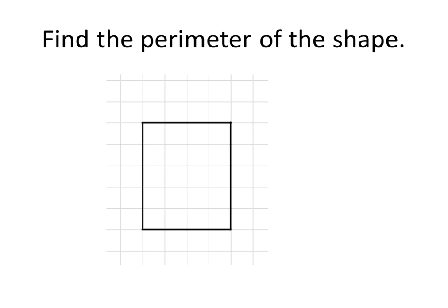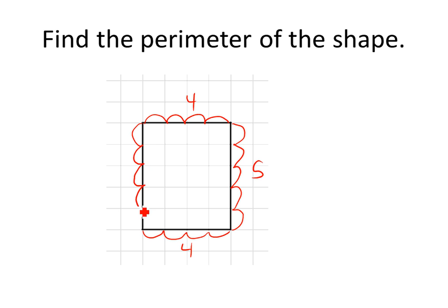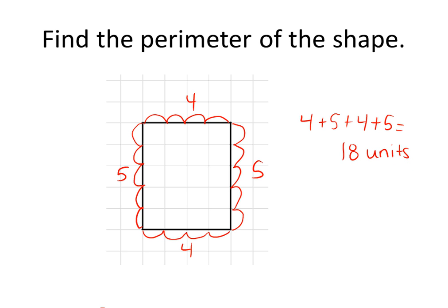What if we want to find the perimeter of a shape but we don't know the side lengths? You're going to have to use your knowledge from a previous video of how to find the side lengths of horizontal and vertical lines. This side length is 4, this side length is 5, this side length is 4, and this side length is 5. So to get the perimeter you do 4 plus 5 plus 4 plus 5, which equals 18 units.